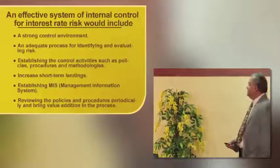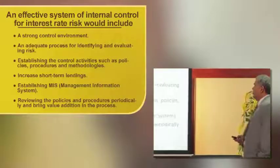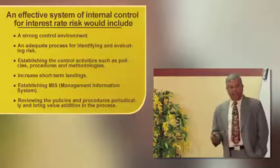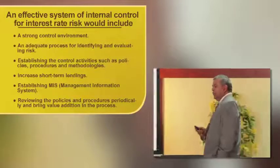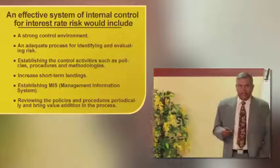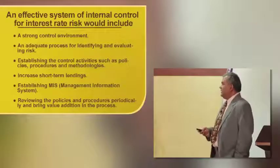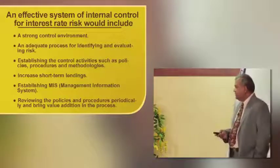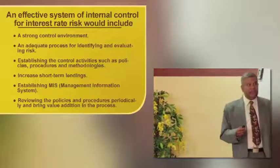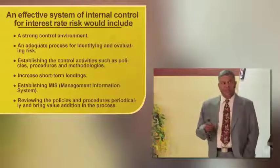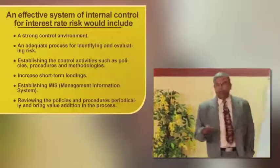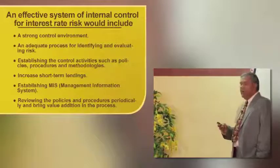For effective control of interest rate risk, a bank needs: a strong control environment, an adequate process for identifying and evaluating risk. Like liquidity risk, there should be a dedicated department. Most banks control interest rate risk through ALCO — the asset liability management committee. Banks must establish control activities such as policies, procedures, and methodologies, and establish a management information system (MIS). Policies must be reviewed every year or whenever a trigger event takes place.